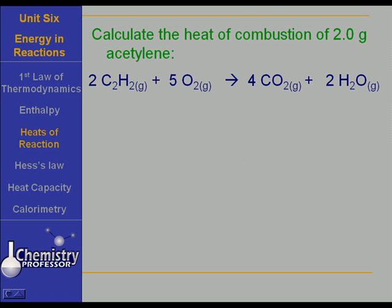Let's calculate the heat of combustion for two grams of acetylene. We have a balanced equation showing two moles of acetylene. C2H2 gas is acetylene. Plus five moles of oxygen reacting to give us four moles carbon dioxide gas and two moles of water vapor. Let's go through and look up the heat of formation from the elements of each of these things at standard state conditions.